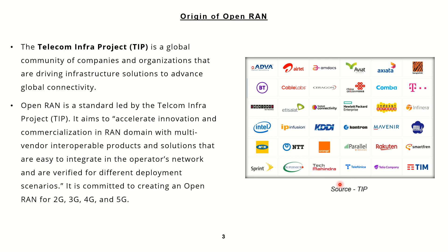Let's get started. The very first topic we are going to talk about is the origin of Open RAN. There is a community called TIP — the Telecom Infra Project — which is led by Meta, or Facebook. Different companies, vendors, operators, and suppliers in the telecom as well as IT industry came together to collaborate and work towards innovating the radio access network. The aim of these communities is to accelerate innovation and commercialization in the radio access network domain.